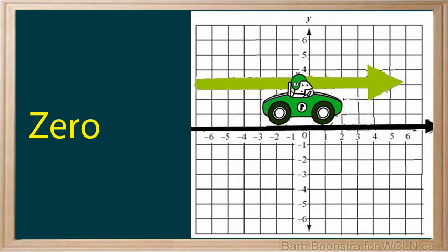A rate of change of zero is shown as a horizontal line. The x values are increasing, but there is no change in the y values.